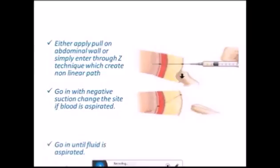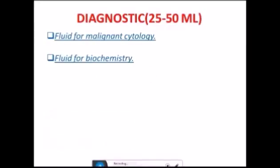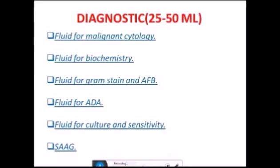Go in with negative suction. Change the site if blood is aspirated. Go until fluid is aspirated. For a diagnostic ascitic tap, 25–50 ml of fluid is removed and sent for malignant cytology, fluid biochemistry, gram stain, and acid-fast bacilli.